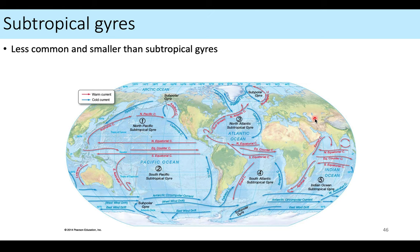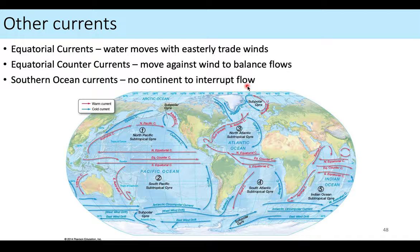There are also less common subpolar gyres caused by similar reasons — wind flow along with continental boundaries. We do create subpolar gyres in both the North Pole and South Pole regions, but they're much smaller than the main five ocean basin gyres.